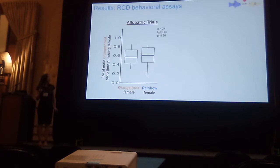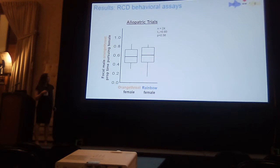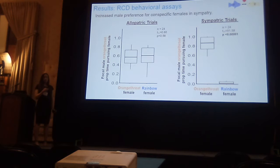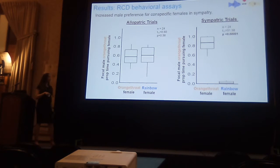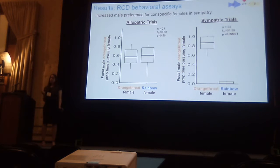Here are the results. On the y-axis for allopatry trials — where orange-throat and rainbow darters don't naturally co-occur — I have the focal male orange-throat darter's proportion of time spent near a female who is either conspecific or heterospecific. You can see those don't differ. But in sympatry, there is a really dramatic increase in male preference for conspecifics — they pretty much ignore females of the other species. So there's really strong male-driven behavioral isolation in sympatry, consistent with character displacement.